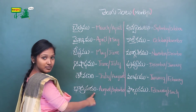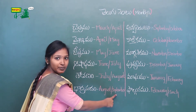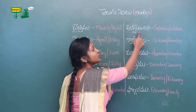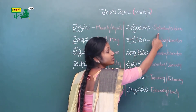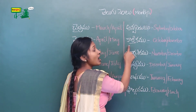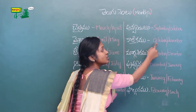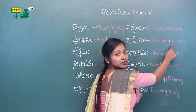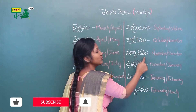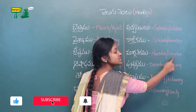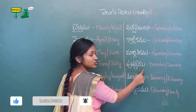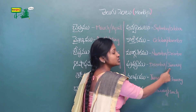Bhadrapadam is August or September. Ashwayujam is September or October. Karthikamu is October or November. Margasiramu is November or December. Pushyamu is December or January.